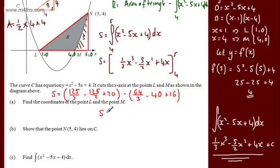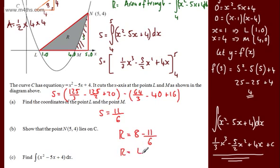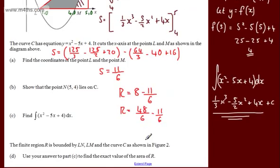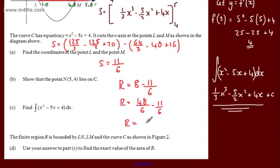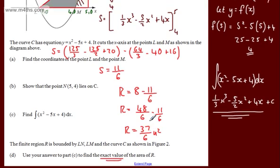So S equals 11 over 6 units. Therefore R equals 8 minus 11 over 6, which is 48 over 6 minus 11 over 6, giving the area of R as 37 over 6 units squared. That is the exact value — exact means we leave it as a fraction, not a decimal.